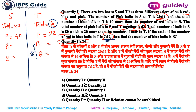The ratio of red to blue in T is 7 to 12, summing to 19 parts. Since 19 parts equals 38, then 1 part equals 2. Using the unitary method: 7 parts means 14 (red in T) and 12 parts means 24 (blue in T). Now, the total number of blue balls in T is 24, which is 10 more than the number of red balls in S, so red balls in S equals 14.